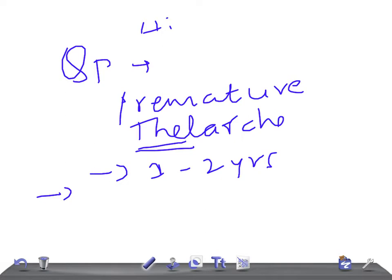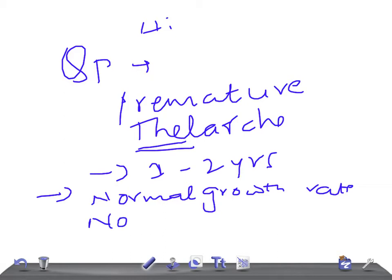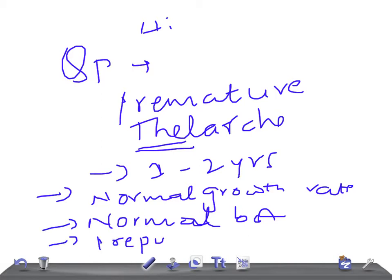The signs and symptoms include a normal growth rate, normal bone age, and pre-pubertal levels of gonadotropins and estrogens. Normal bone age is really important, because in precocious puberty the bone age will be advanced.